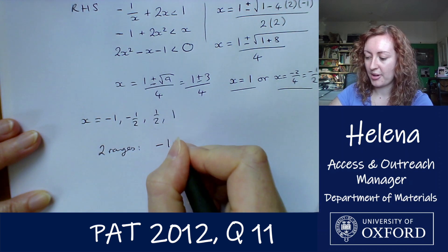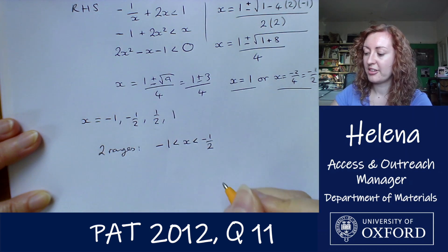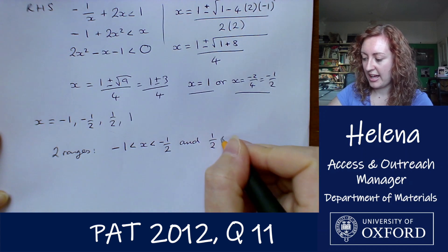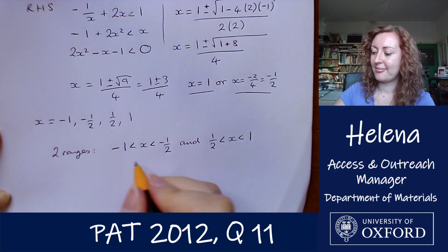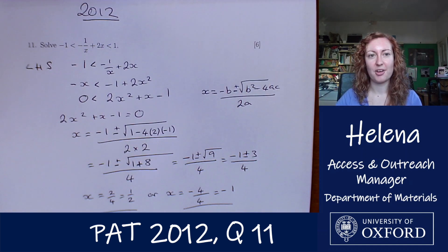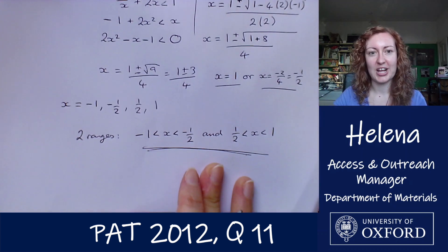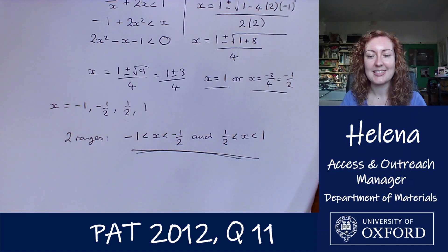So we have minus 1 is less than x which is less than minus a half, and again where x is greater than a half but less than one. And that is our inequality solved. So we have two ranges of x for where this inequality holds true, and like I say you can check some values, you can test it just to make sure that that is the answer that we get.